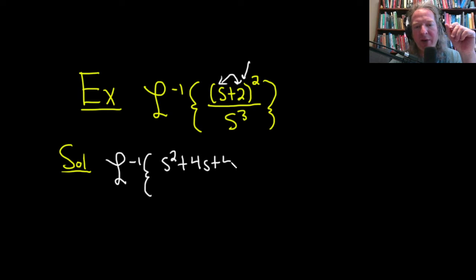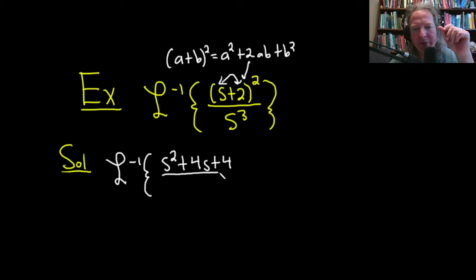That always works whenever you have something like this, something plus something squared. The formula is a plus b squared: a is the first one, so you square the first one. You multiply them and double them, so 2ab. And you square the last one, so b squared. And this is all over s cubed.